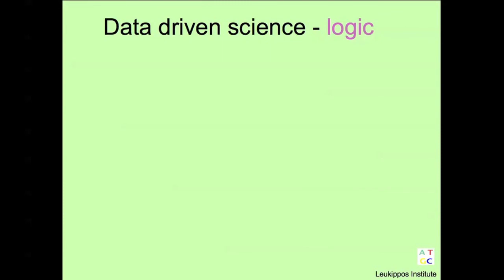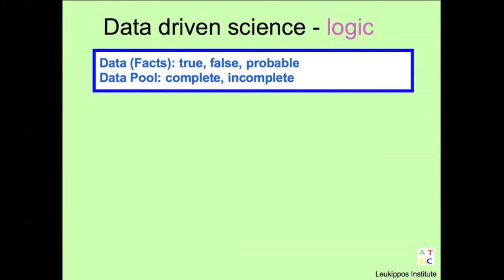Let us have a look at the logical form we can find in the data-driven science. The data pool is our collection of facts. These facts can be either true, false or probable, depending on the quality of our measurements and our science. The data pool in its whole can be either complete or incomplete. This pool is the starting point of our research. We apply our research method on this pool.